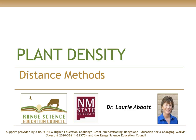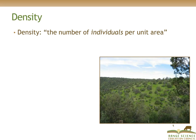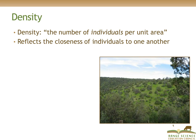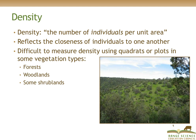Plant Density: Distance Methods. Density is defined as the number of individuals per unit area, and it reflects the closeness of individuals to one another. In certain vegetation types, it can be difficult to measure density using counting methods that use quadrats or plots.